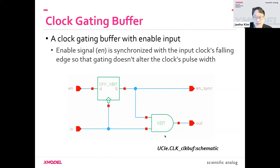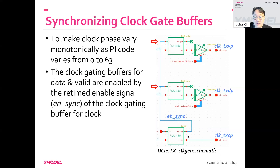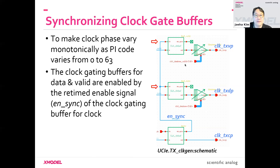The trick is to take the synchronized enable for the clock-for-clock and use it as the enable signal for the other clock buffers — for data and valid. This achieves the synchronization effect mentioned earlier. This is tricky and took significant effort to figure out how to implement properly.